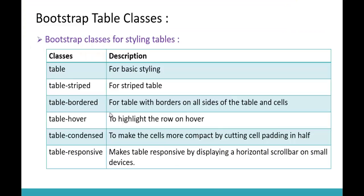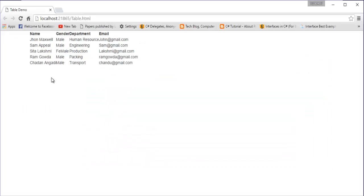In order to make this table beautiful, we have Bootstrap classes available. They include Table, Table Striped, Bordered, Hover, Condensed, and Responsive. Using all these classes, we can make this table more stylish and also responsive.